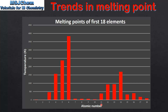Next we look at the trend in melting point across period 3, starting with atomic number 11 which is sodium, to atomic number 18 which is argon. Once again we see an increase in melting point as we go from sodium to magnesium. Magnesium and aluminium have similar melting points and then we see an increasing melting point as we go to silicon. Next we see a decrease in melting point as we go to phosphorus and then sulfur, chlorine and argon.